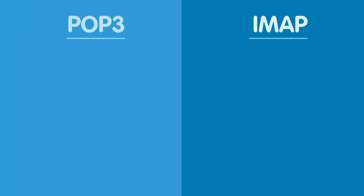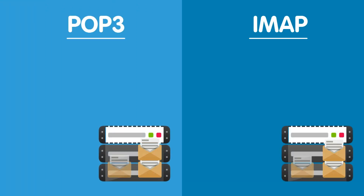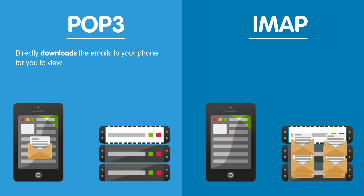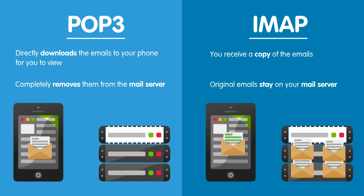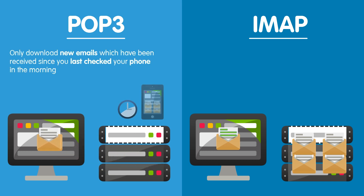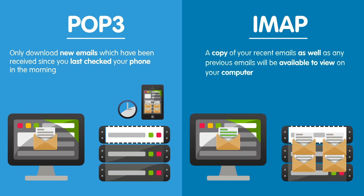For example, you go to bed and overnight a stack of emails start to build up on your mail server. When you wake up and access your mail from your phone, POP3 directly downloads the emails to your phone for you to view, which completely removes them from the server. Whereas using IMAP, you receive a copy of the emails while the original emails stay on your mail server. Later on in the day, you want to check your emails on your computer. Using POP3 means you can only download new emails received since you last checked your phone in the morning. If you have configured your mail server with IMAP, then a copy of your recent emails, as well as any previous emails, will be available to view on your computer, while the original emails stay on the mail server.